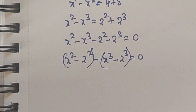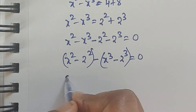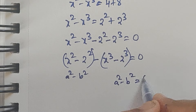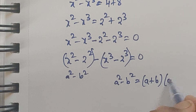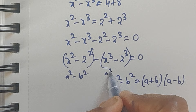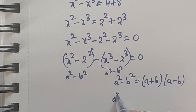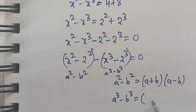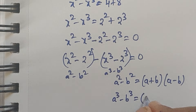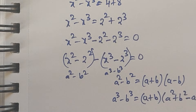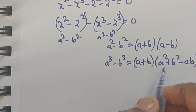Now this is in the form of a squared minus b squared. We know the formula: a squared minus b squared equals (a plus b)(a minus b). And this part is in the form of a cubed minus b cubed, which equals (a plus b)(a squared plus b squared minus ab). We know these formulas and will use them here.